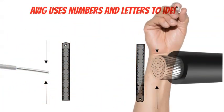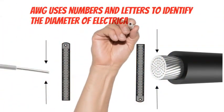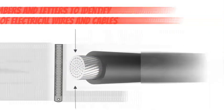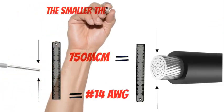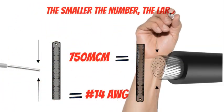AWG uses numbers and letters to identify the diameter of electrical wires and cables. The smaller the number, the larger the diameter of the wire or cable.